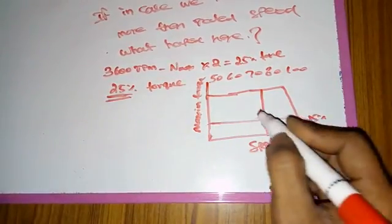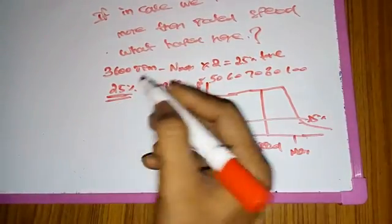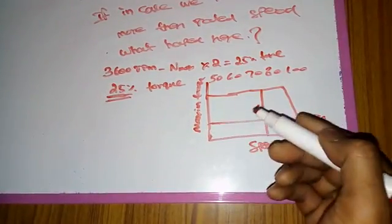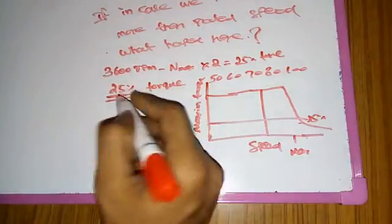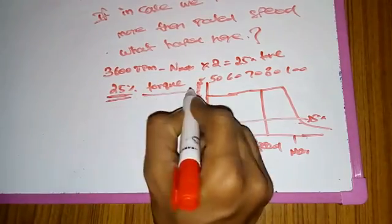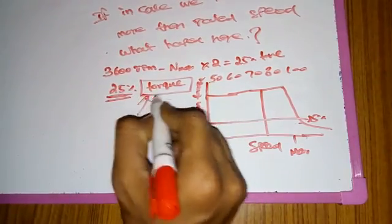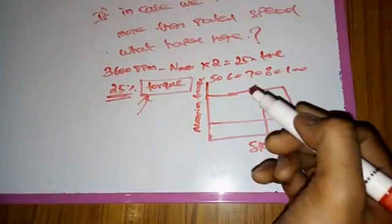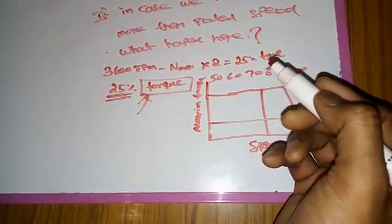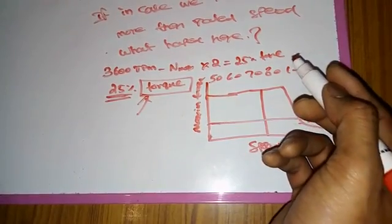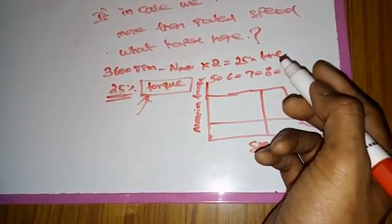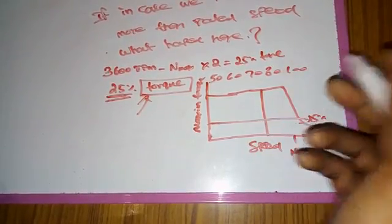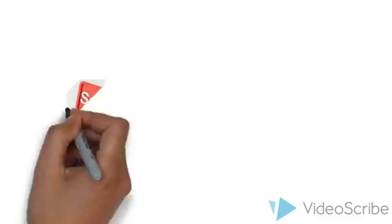You can apply two times the frequency and two times the speed, but that speed and frequency are not efficient to get more torque from the motor. This is the reason we run the motor at rated speed rather than above it. These are the doubts I received over the last month — sorry for the delay. If you have any questions, please comment. Thank you for watching.